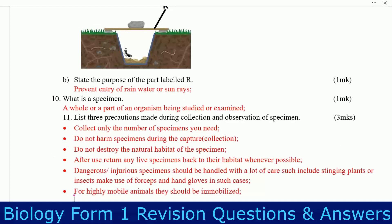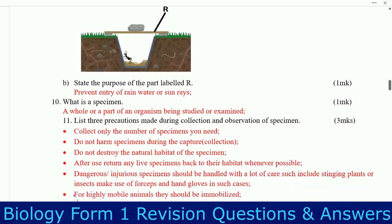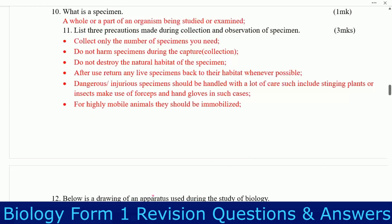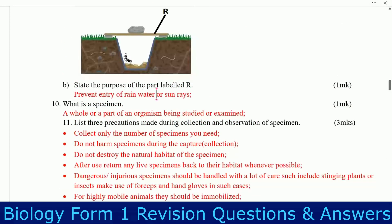Question nine: below is an apparatus used to trap specimens — identify the apparatus. This one is a pitfall trap. You can see an organism has been caught. Next, state the purpose of the part labeled R. The part labeled R is used to prevent entry of rain water or sun rays.